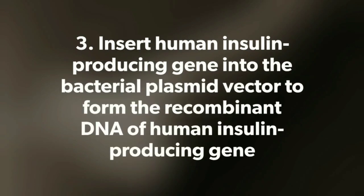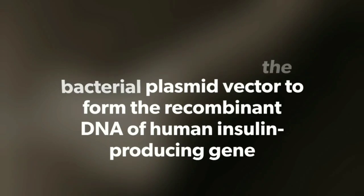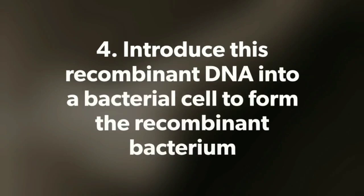Third, the human insulin-producing gene is inserted into the bacterial plasmid vector. Fourth, this recombinant DNA is introduced into a bacterial cell to form the recombinant bacteria.